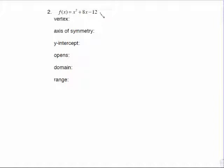Same kind of problem, but this one is not in standard form. You're going to have to find the vertex by using the formula negative b over 2a to start with. So a is 1, b is 8, c is negative 12. Not that that matters. So this is negative 8 over 2 times 1, which is negative 8 over 2, which is negative 4. So we know the x part of the vertex is negative 4.